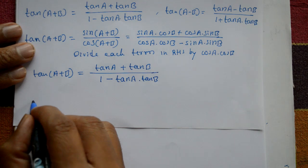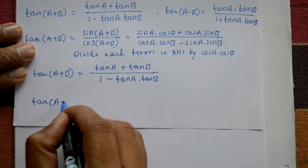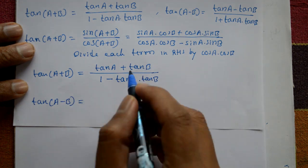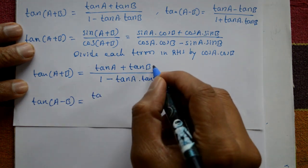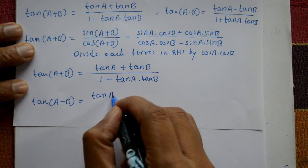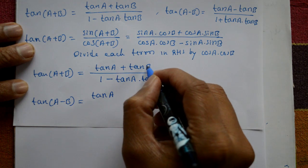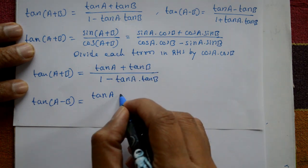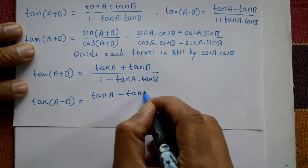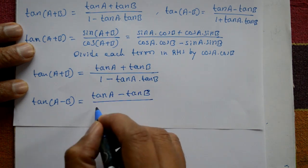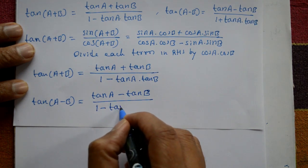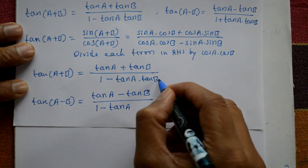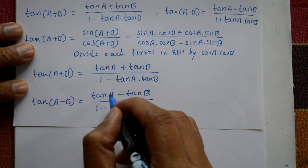That is the first formula. Now one more: tan(a-b). Take b equal to minus b. tan a is as it is, and b becomes minus b, so tan of minus b. tan(minus b) equals minus tan b. Divided by 1 minus tan a into tan(minus b).